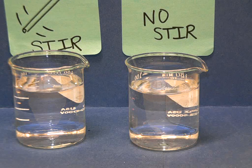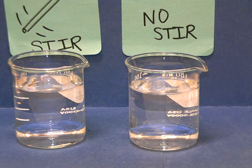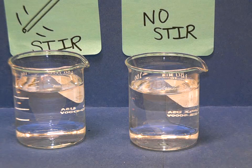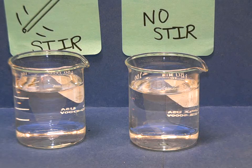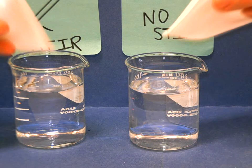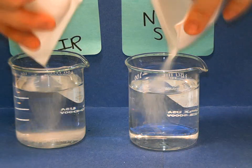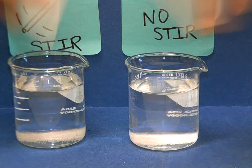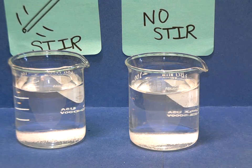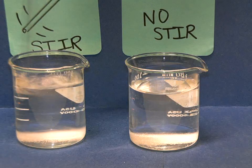And then we're going to place about 1 gram of salt in each at the same time. I'm going to stir one and not stir the other.